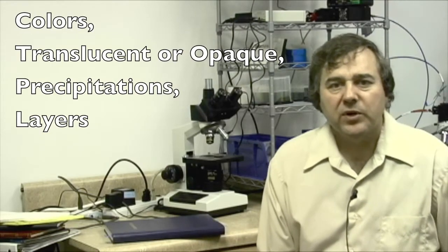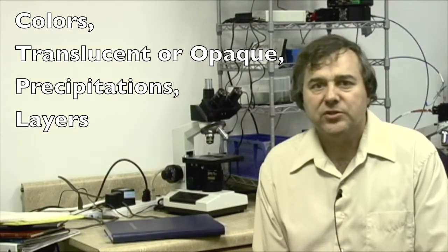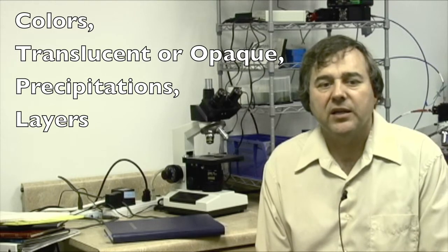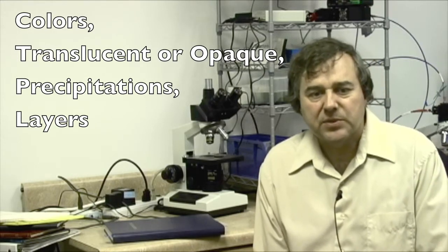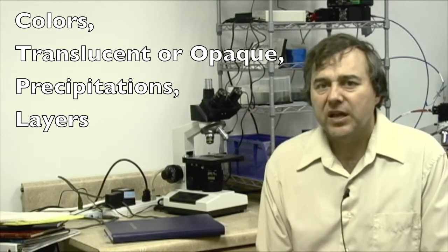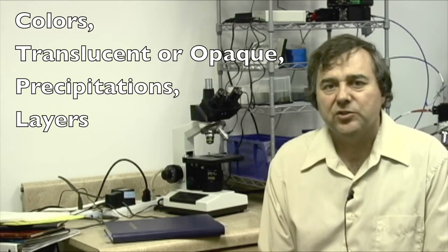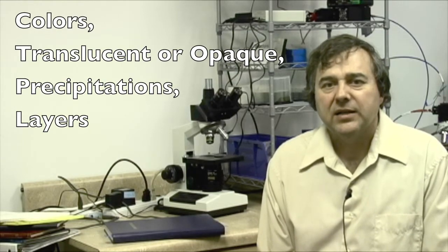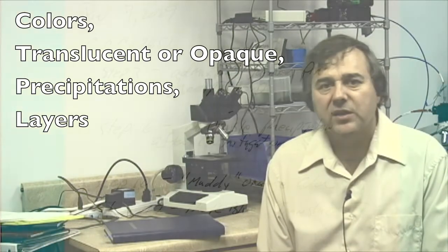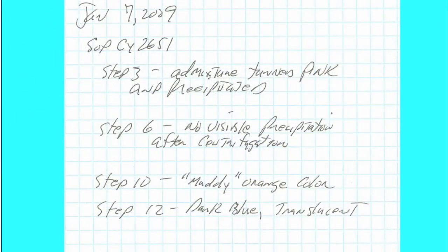When making a reagent, note the colors, whether it's translucent or opaque, clear or cloudy. Note the formation of any precipitants. Note the formation of layers - for instance, if you have a separation into a top layer and a bottom layer, that could be important in the long run. It indicates there's a lack of solubility. Note the approximate times when a change was observed.